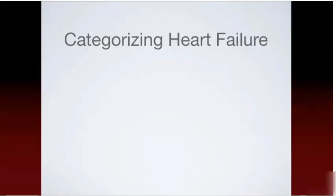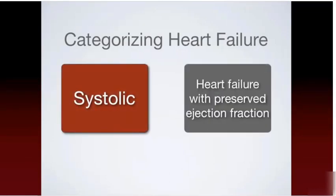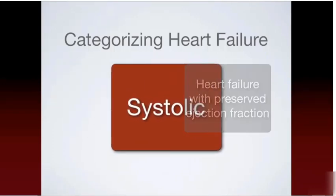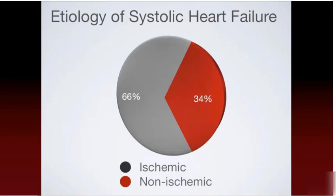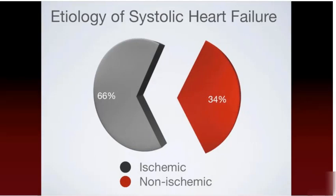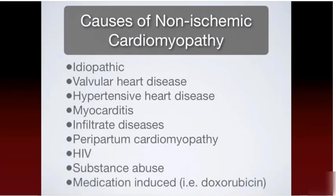Regarding etiology: to talk about etiologies of heart failure, we must first categorize heart failure into main categories. We generally group heart failure into two main categories — systolic and diastolic heart failure. Diastolic heart failure is also known as heart failure with preserved ejection fraction. For the purposes of this module, we will focus primarily on systolic heart failure. About two-thirds of systolic heart failure cases are related to ischemic cardiac disease, such as myocardial infarction or chronic coronary ischemia, or non-ischemic cardiomyopathy. There are many causes of non-ischemic cardiomyopathy, and a full discussion is beyond the scope of this module.